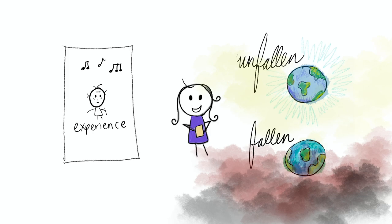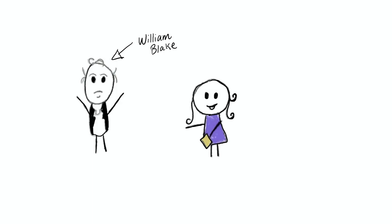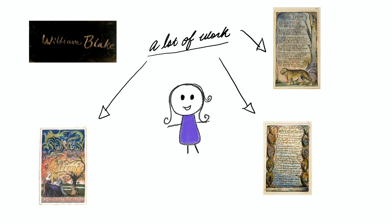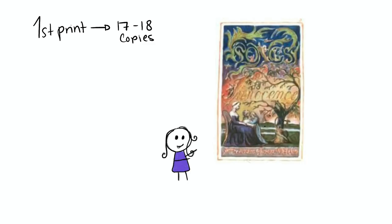Songs of Innocence was published first in 1789. These poems weren't just written — they were pieces that were illuminated, engraved, hand painted, colored, and hand printed by the author himself. This made it so that these poems weren't as widespread back in his day because they weren't available to as many people. The first print only produced 17 to 18 copies, and they were really only sold to friends and private collectors.